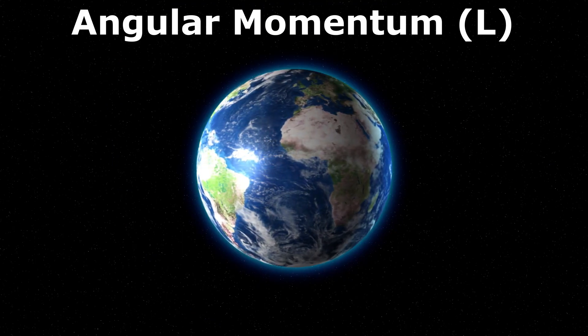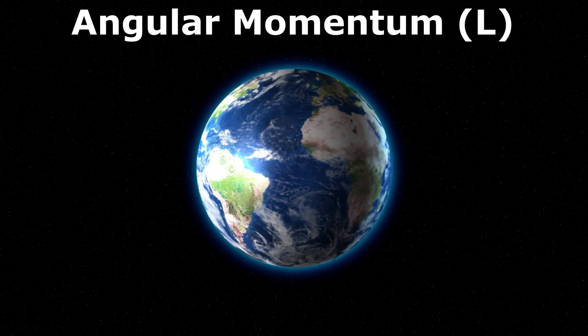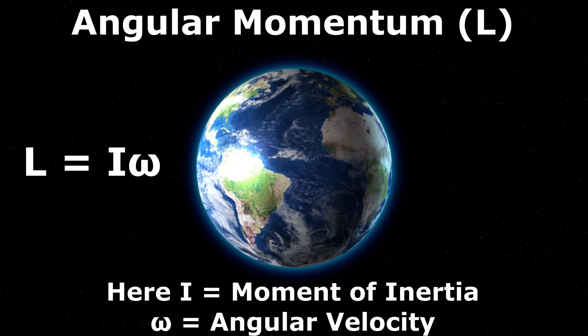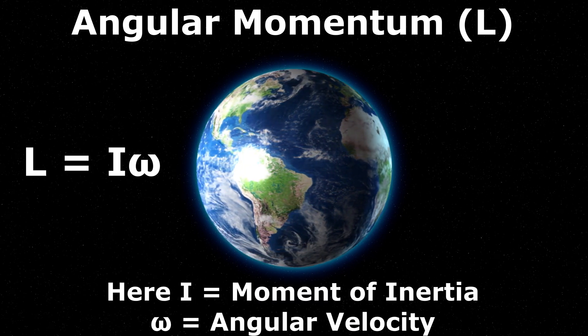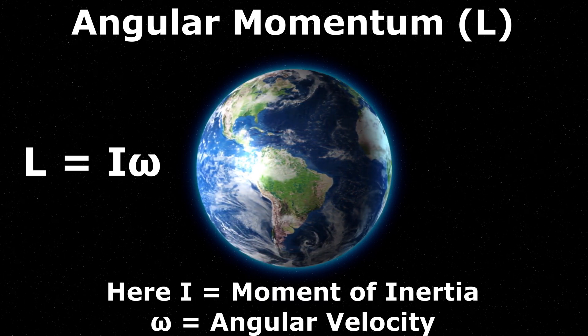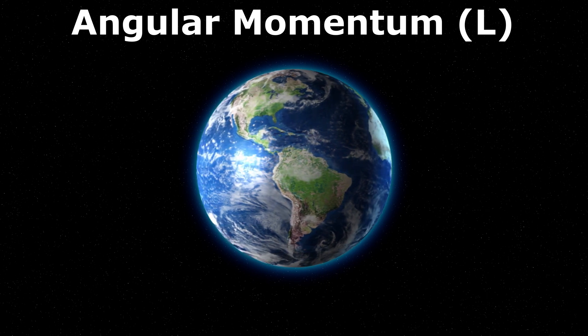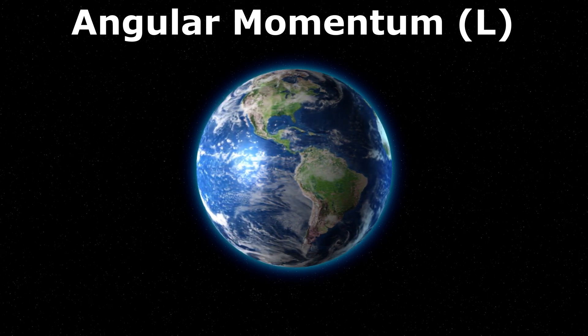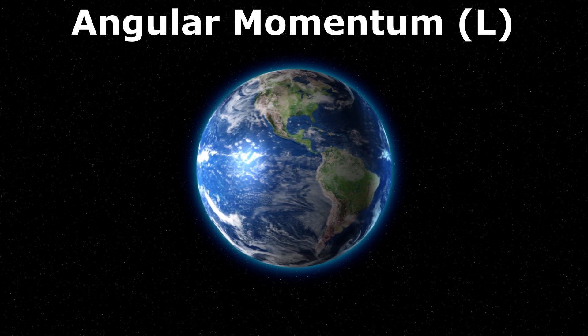Angular momentum is a property of a rotating object. It is defined as the product of its moment of inertia and angular velocity. When no external torques are acting on a system, the total angular momentum is conserved.